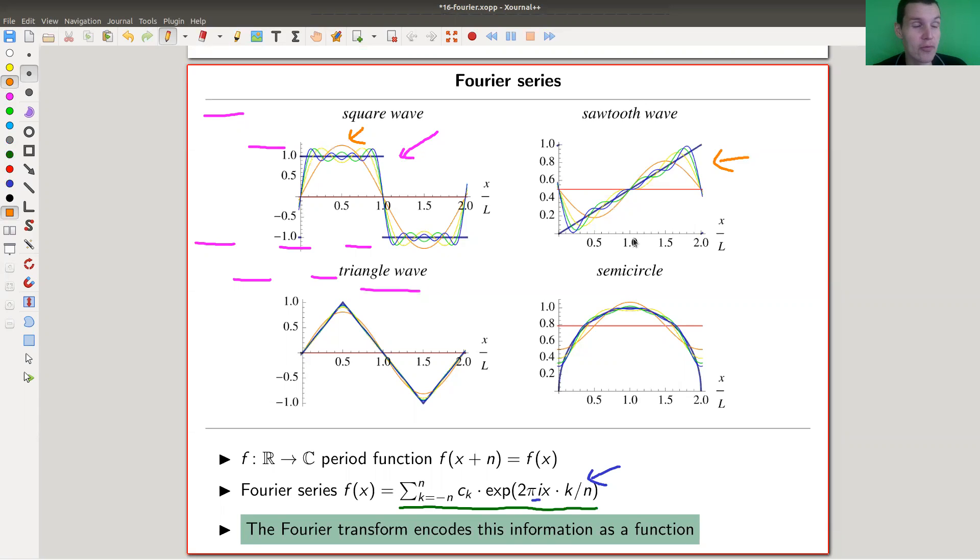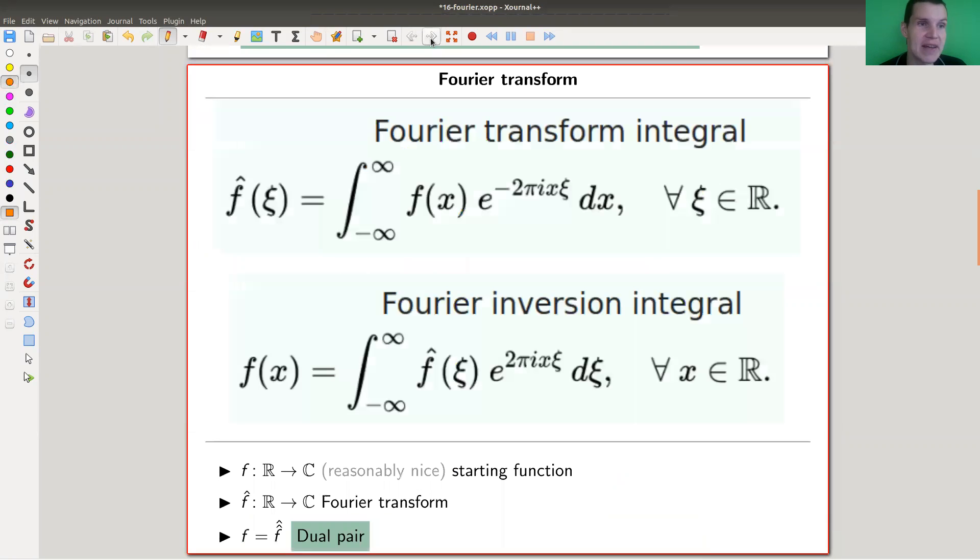So that's a related notion of the Fourier series which is the Fourier transform. This encodes all this information as a function if you want, and this is the way how it works. We will see those formulas in a second for the finite groups. Maybe you remember the dual group - there was a hat notation for the Fourier transform, you also use the hat notation.